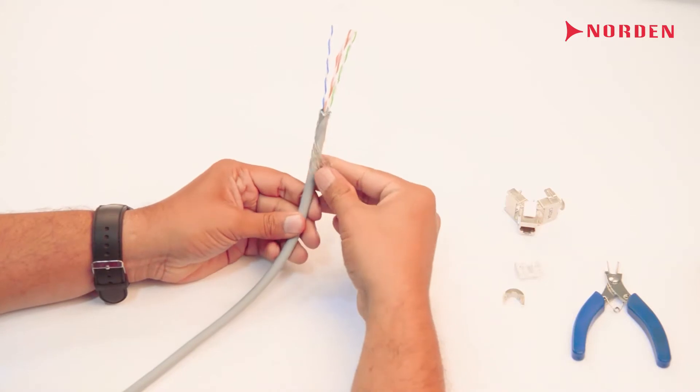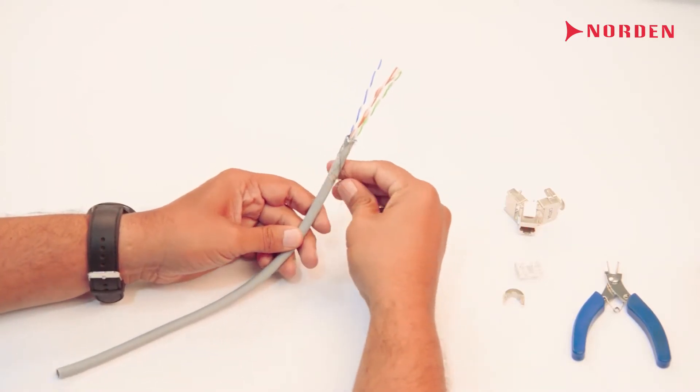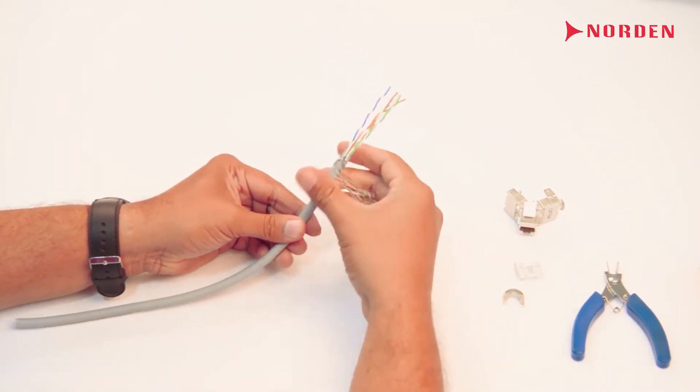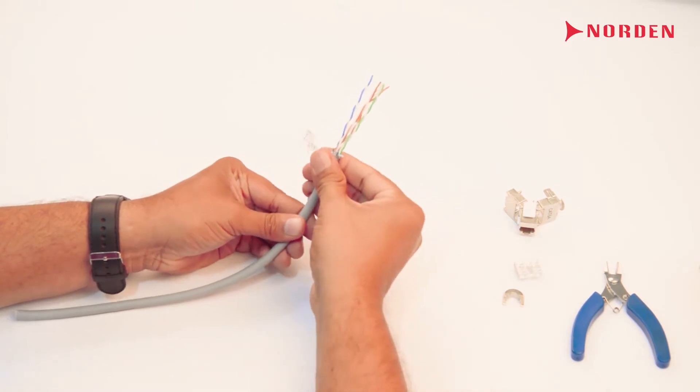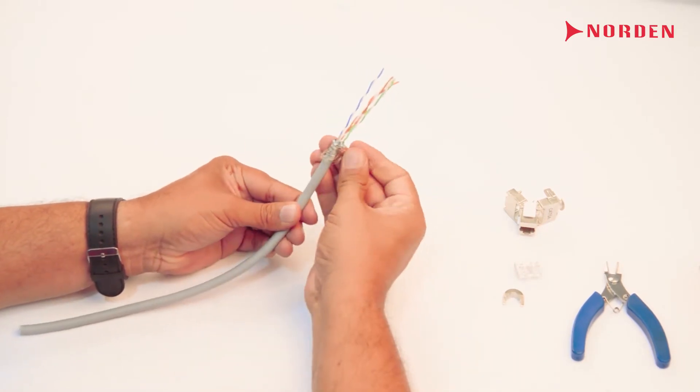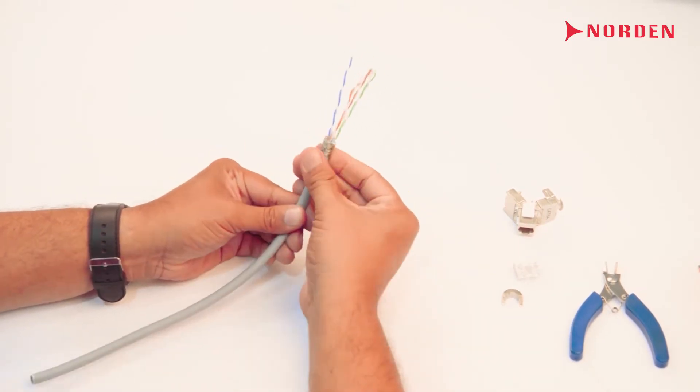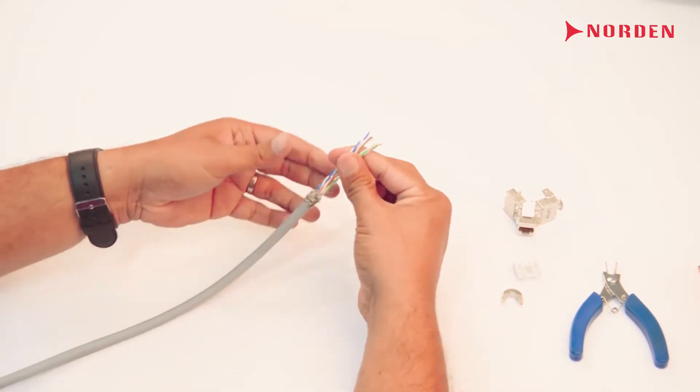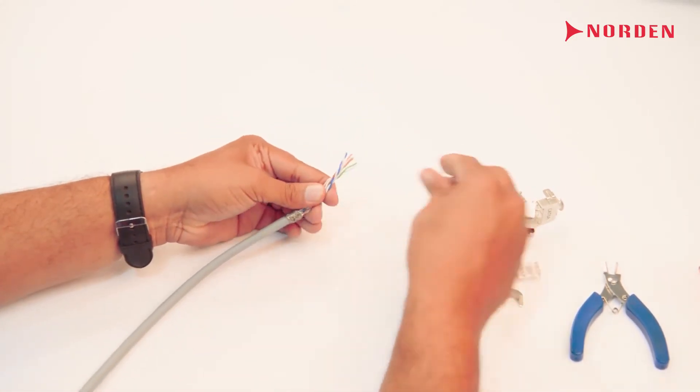Now move the braided wire upwards and twist around the cable jacket. Next, take the keystone jack termination cap.